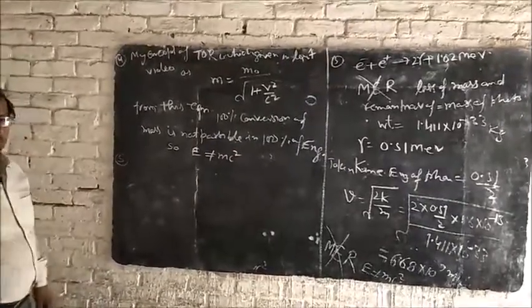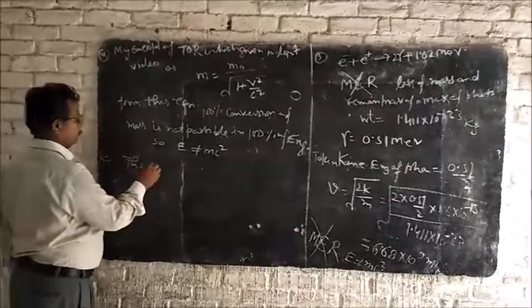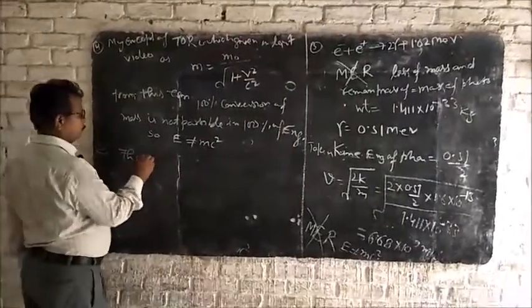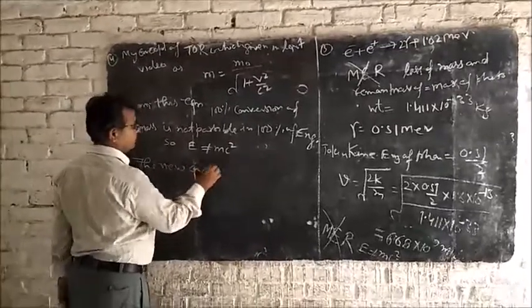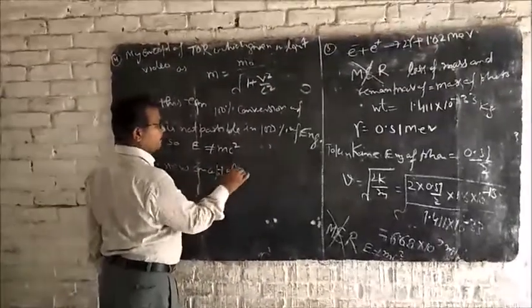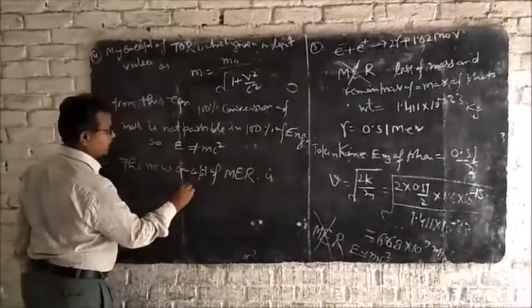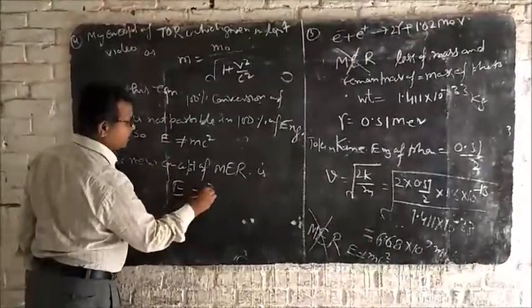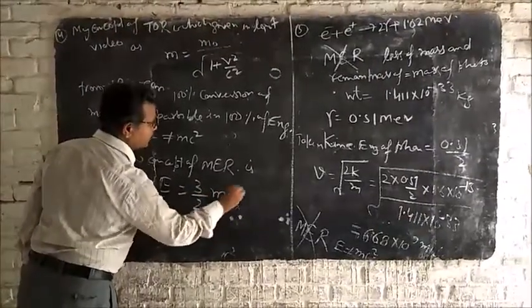Number 5. On the basis of my studies, the new concept of mass-energy relation is equal to 3 by 2 m Cx square.